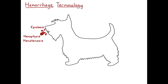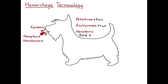There are a few different terms that we use to describe hemorrhage within tissue, including the skin. Petechia means there are pinpoint hemorrhages less than two millimeters in diameter. Ecchymosis are slightly larger hemorrhages greater than one centimeter in diameter, and hematoma is a solid swelling of hemorrhage within a tissue.